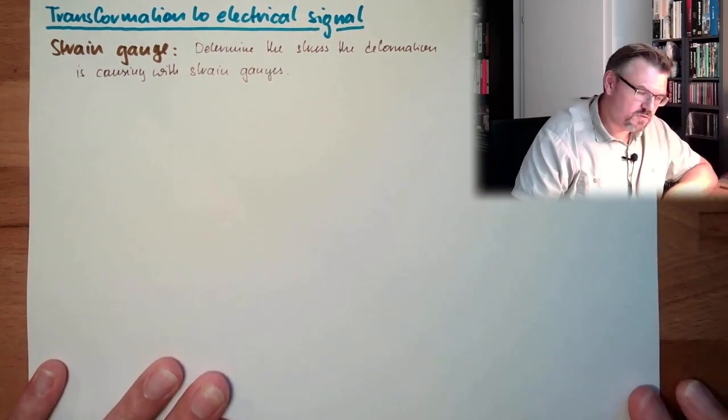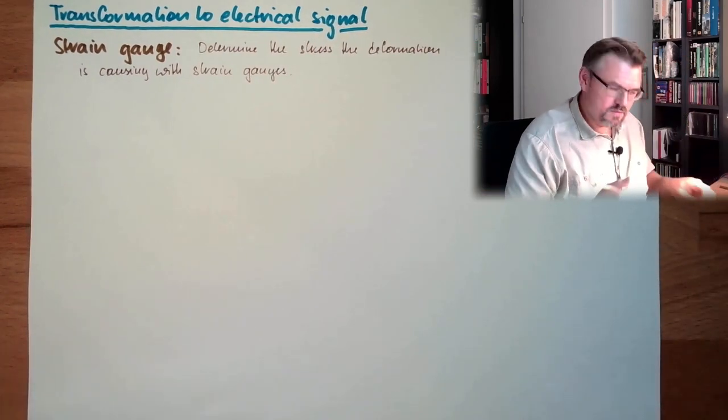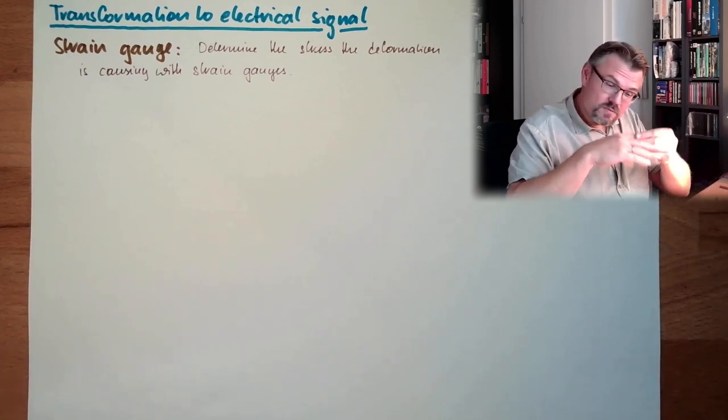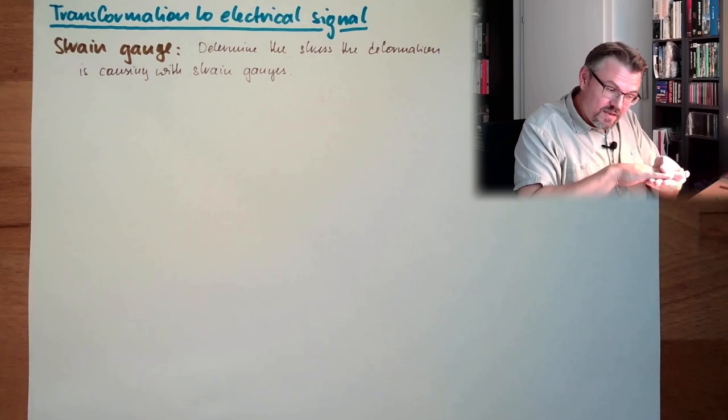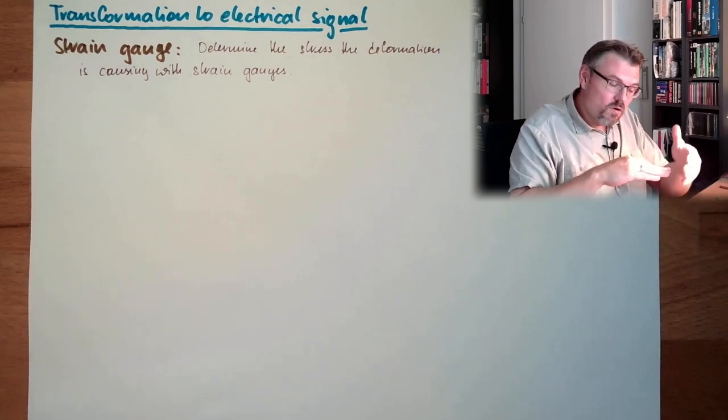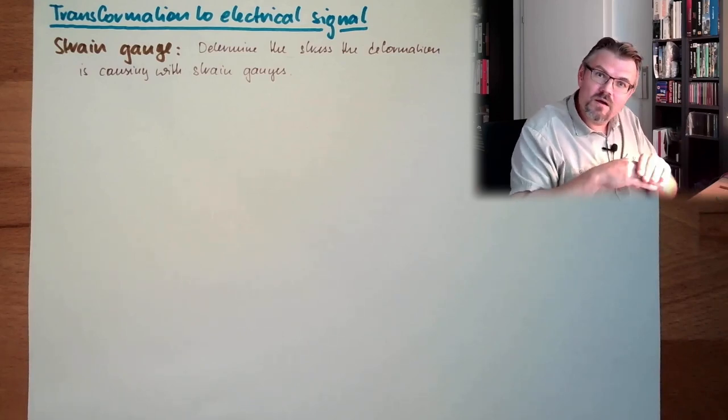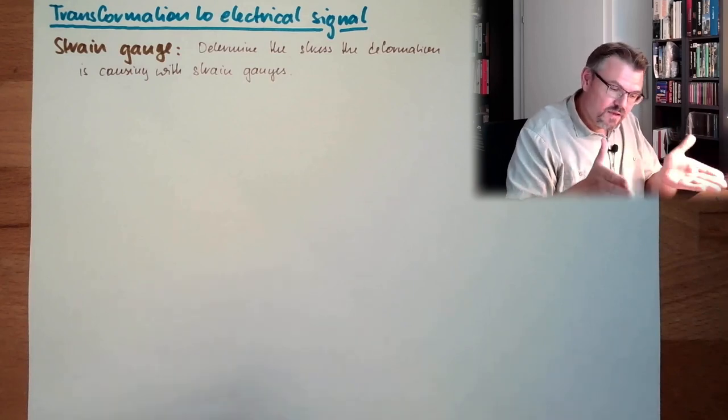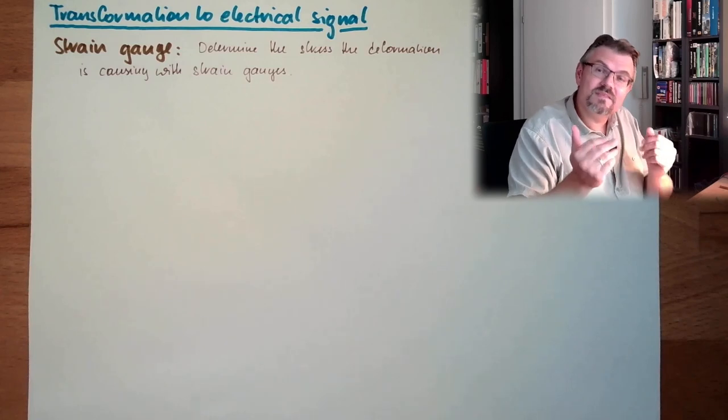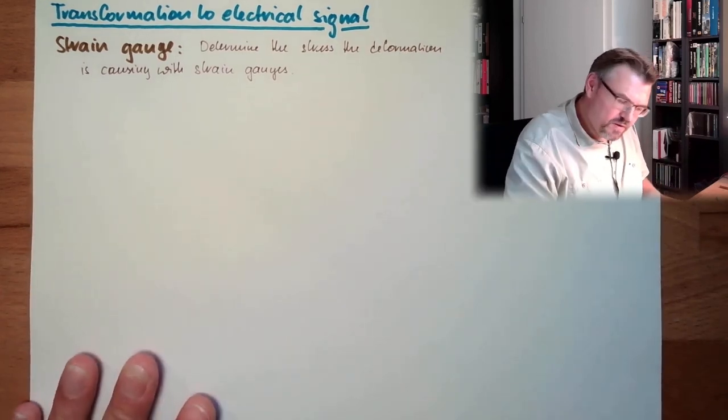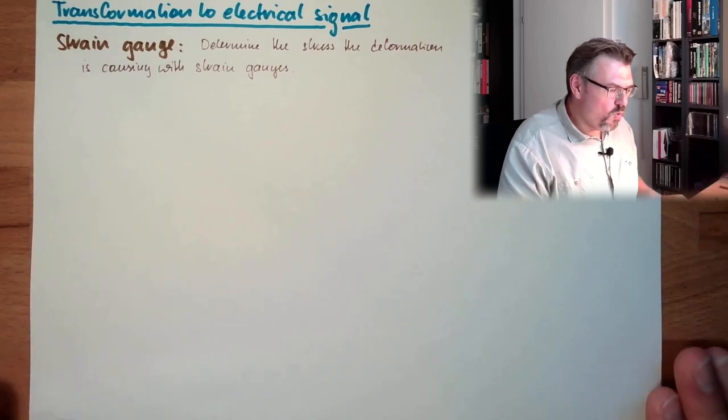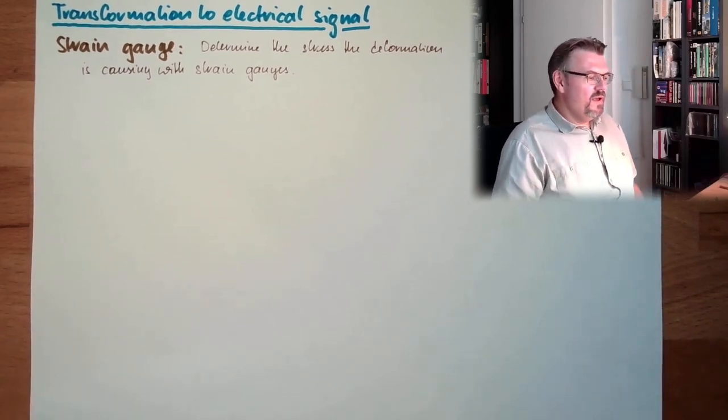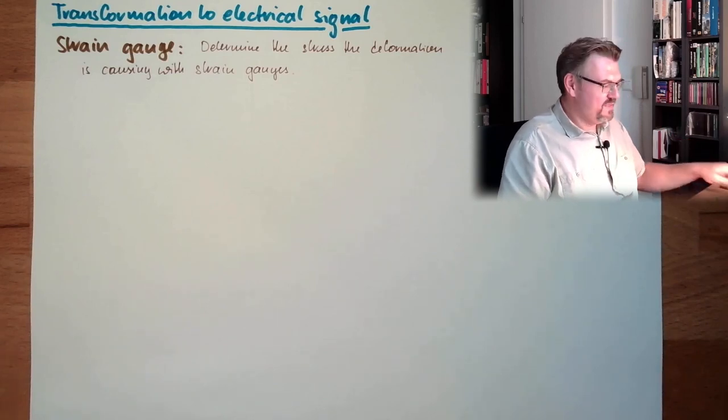So we determine the stress the deformation is causing with strain gauges. This is a separate video about how strain gauges are working. This is actually measuring the resistance. It's a grid with some tiny wires. And if they're getting prolonged, then the resistance will get higher. If they're getting shrink, the resistance will get lower.